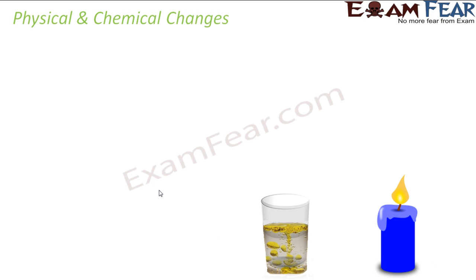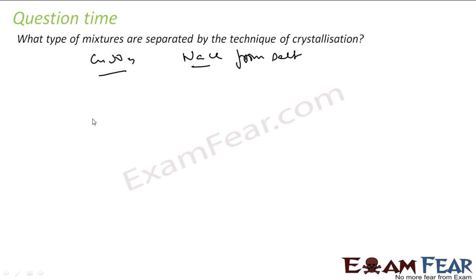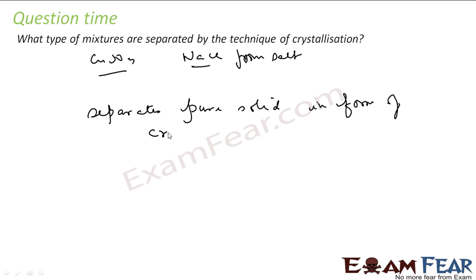The next question is: what type of mixtures are separated by the technique of crystallization? We have seen copper sulfate and NaCl getting purified. NaCl from saltwater — saltwater has NaCl — we use crystallization for this too. Crystallization typically separates pure solid in the form of crystals from a solution. We have seen copper sulfate crystals and sodium chloride crystals getting separated from solution.